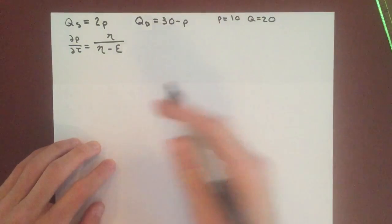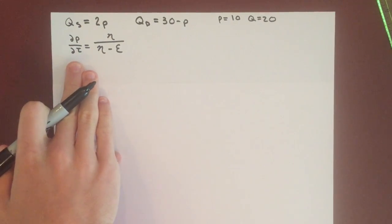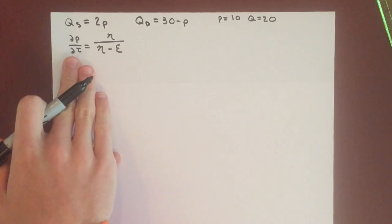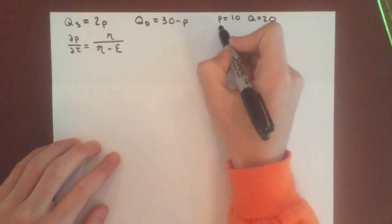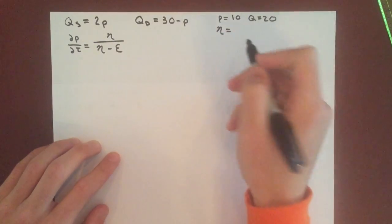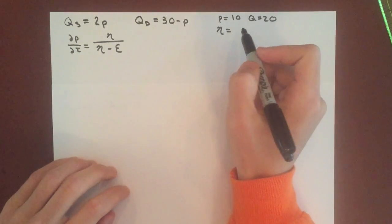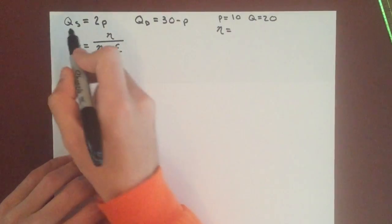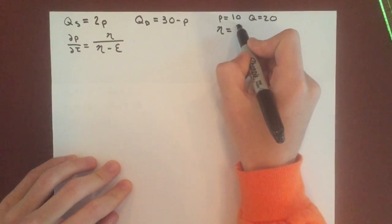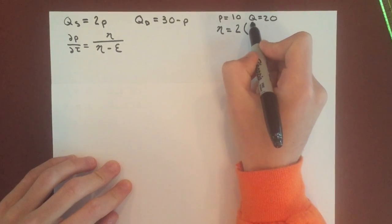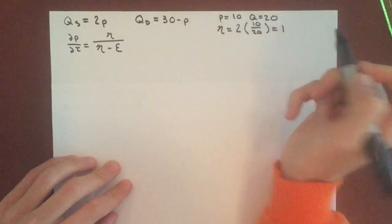Knowing this, we have all the information we need to solve for the tax incidence on consumers, which is dp/dt. Let's find the elasticity of supply first. Just like elasticity of demand, you take the partial derivative of supply with respect to p. In this case, it's just 2, then multiplied by p over q, which equals 1.